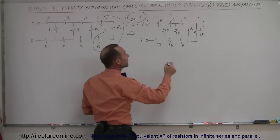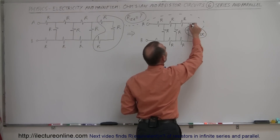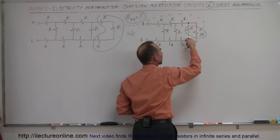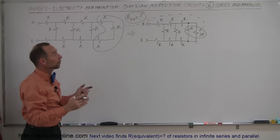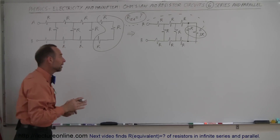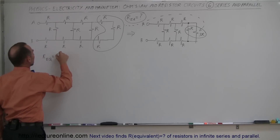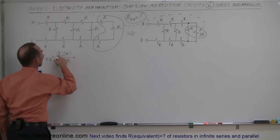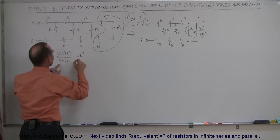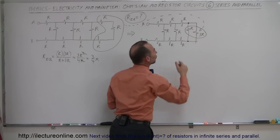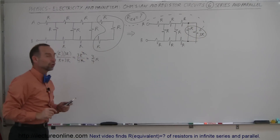The next step is to combine these two resistors, because those are now easily seen to be in parallel. From that branch point to this branch point, you can either go through the R resistor or the 3R resistor, so they're in parallel. When you have two resistors in parallel, R equivalent equals the product over the sum: R times 3R is 3R² divided by 3R plus R which is 4R. The R cancels, leaving three-quarters R.